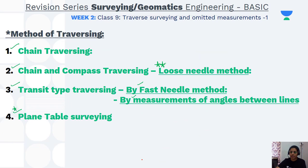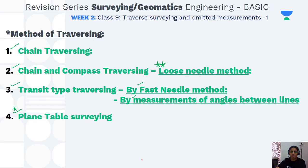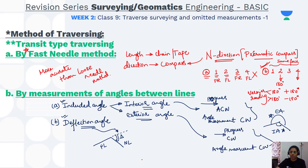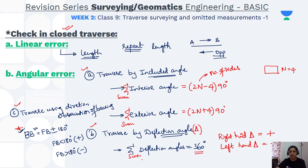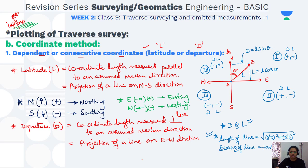Yesterday we already covered traverse surveying: introduction and types, the methods for doing traverse surveying, the difference between each method, the checks for closed traverse including linear error and angular error, and how to do plotting of traverse surveying using the angle and distance method and the coordinate method.